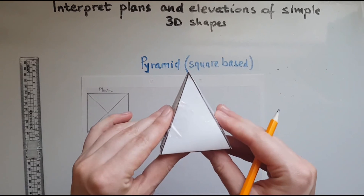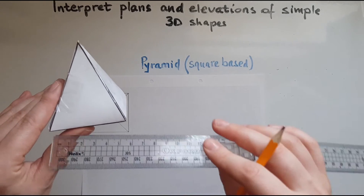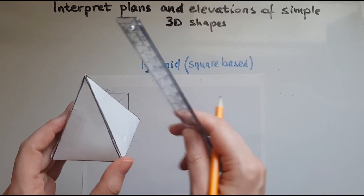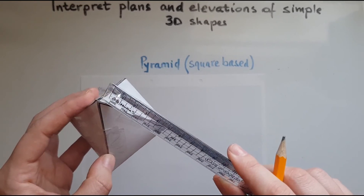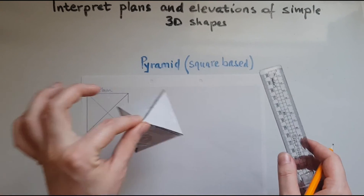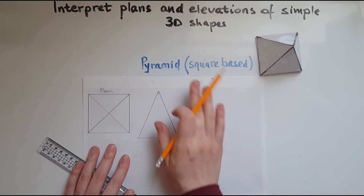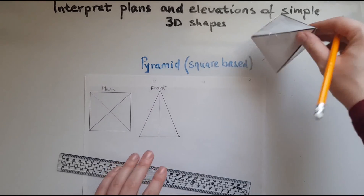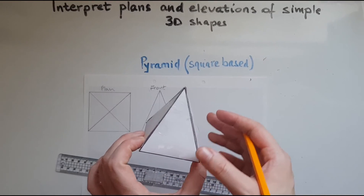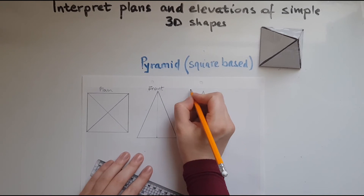Now we'll look at the front elevation — we've got a triangle to draw. The base was 6.6 centimetres. We need to make sure not to measure the slanted height; we've got to measure the real height of the pyramid. At this level you're not required to work this out, so I'll give the measurement: it's about 8 centimetres. So this is the front elevation. The side elevation will be identical — this is the case with the square-based pyramid. So we draw another identical triangle for the side elevation.